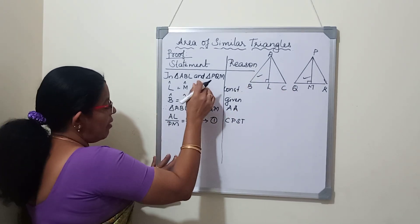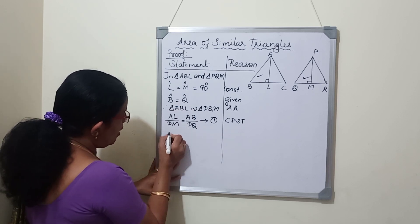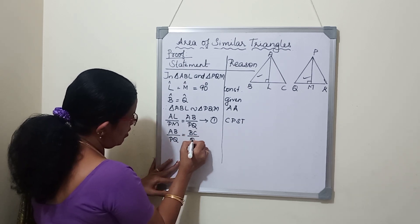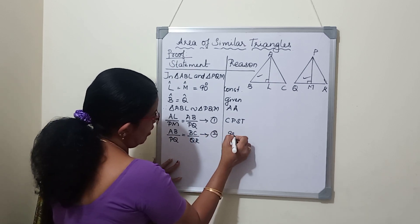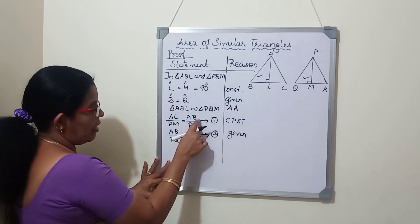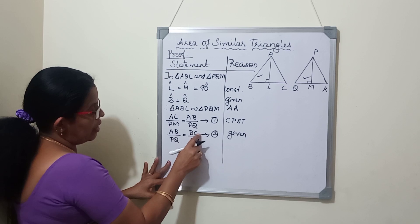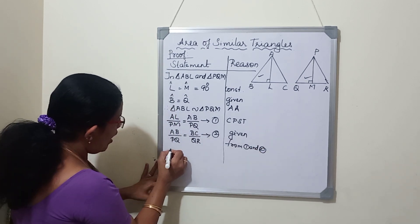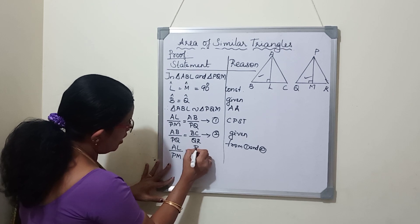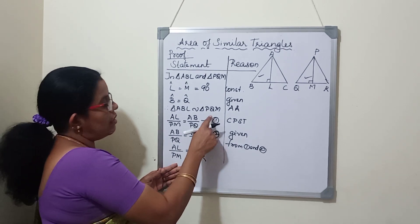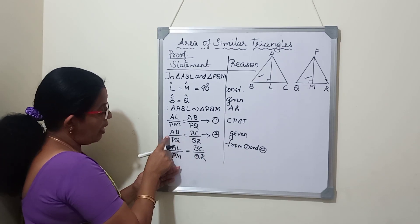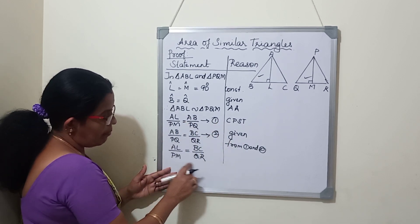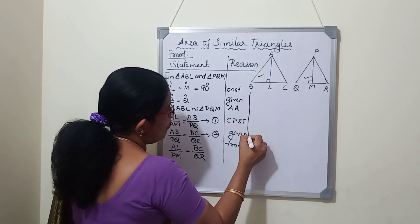In the given part we have written that AB by PQ is equal to BC by QR - we will write this as equation 2, and it is given. From equations 1 and 2, AB by PQ is equal to AL by PM, and again AB by PQ equals BC by QR. So from 1 and 2, AL by PM is equal to BC by QR.